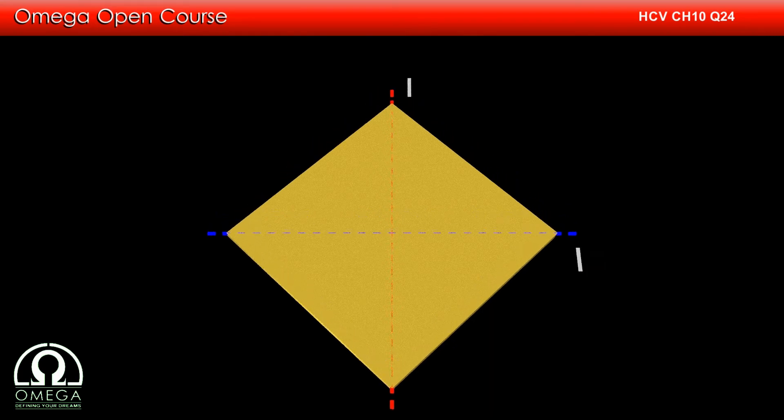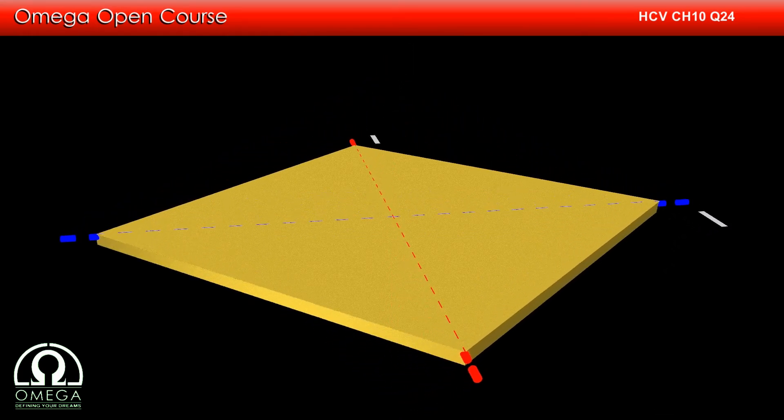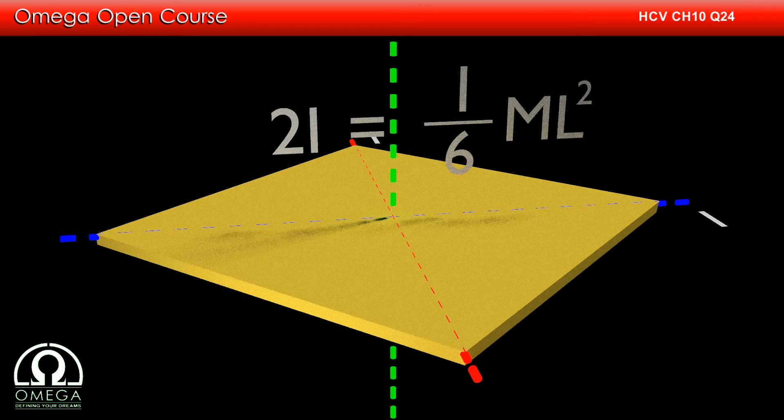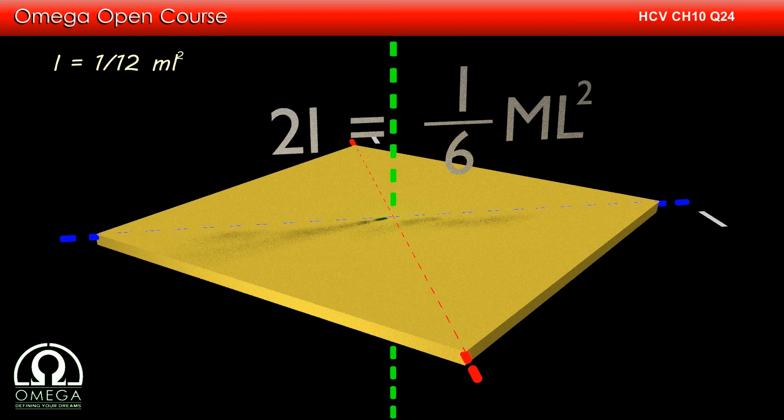Sum of the moment of inertia about the diagonals must be equal to the moment of inertia about the axis perpendicular to the sheet, or 2i must be equal to 1 by 6 ml squared, which implies i is equal to 1 by 12 ml squared. Thus, the moment of inertia of a square about its diagonal is 1 by 12 ml squared.